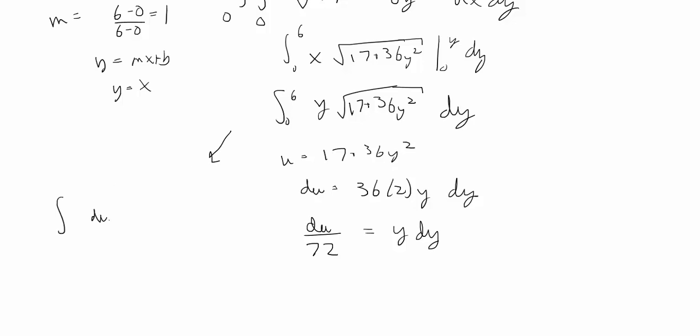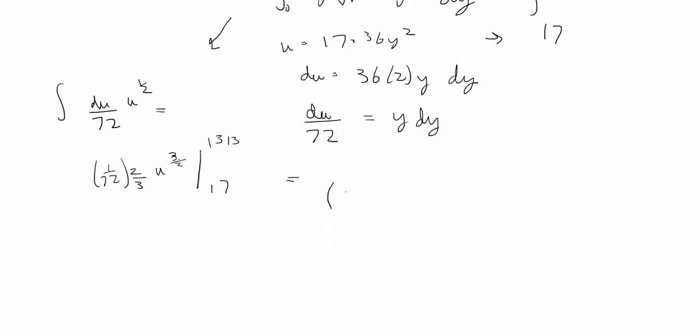Plugging that in, we're going to get du over 72 times u to the 1 half. If we take the integral, we're going to get u to the 3 halves times 2 thirds times 1 over 72. And then let's go ahead and change the integrand ranges. So when we plug in 0, we're going to get 17. And when we plug in 6, we're going to get 1313. So it's not the prettiest integral ever, but it's not that hard either. Plugging in that and simplifying, our answer will be 1313 to the 3 halves divided by 108 minus 17 to the 3 halves divided by 108. Or approximately 439.879.